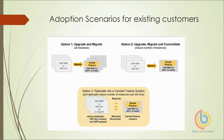The second option is 'upgrade, migrate, and consolidate.' Here again, starting with three environments for SAP ERP or R3, you upgrade the database to SAP HANA, migrate the transaction values to S4HANA Finance, and at the same time consolidate the data into a single environment. Previously there were three environments, but in the new landscape there will be only one. This reduces the number of instances.